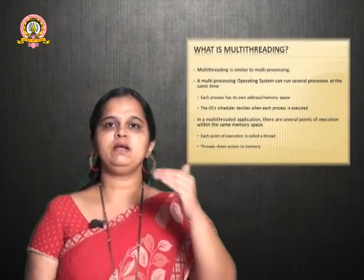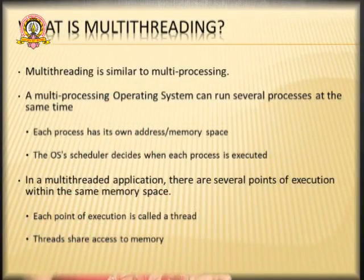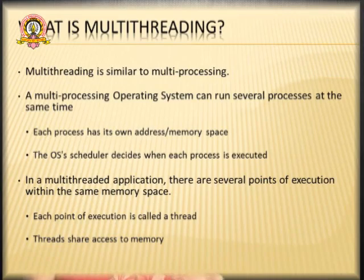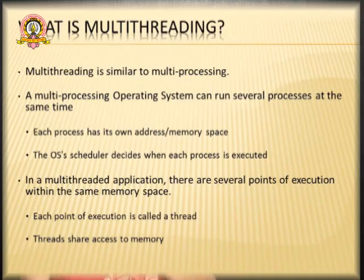The difference between multiprocessing and multithreading is: in multiprocessing, the operating system takes care of scheduling between one process and the other — when each process should execute. The memories are also different; memory space is different, and context switching is done between processes. But in multithreading, within a single process, the operating system takes care of executing multiple threads.